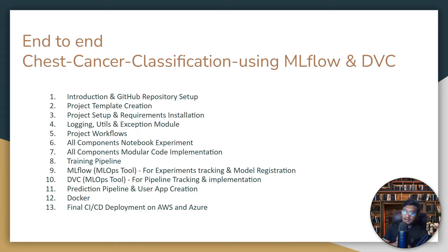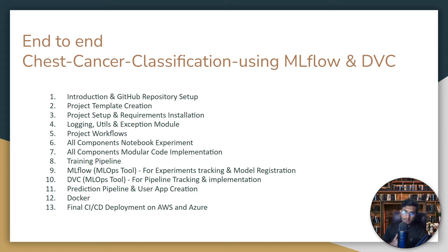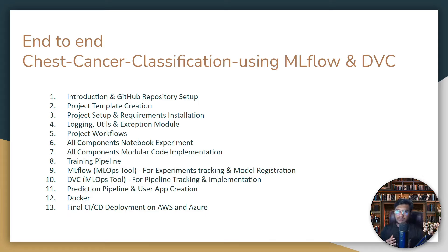Now let me show you the agenda of this entire video. First I'll show the introduction of the project, then we'll be doing the GitHub repository setup, then creating the project template. When I implement any end-to-end project, I always try to follow project template creation first. Then we'll be setting up the project requirements, because whenever you try to create any end-to-end project, requirements installation is needed. Then a very important tool: logging utils and exception module, which is needed in every end-to-end project for debugging code easily.